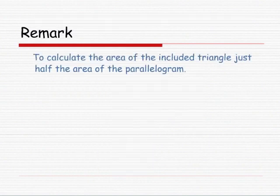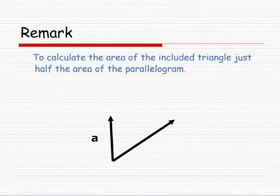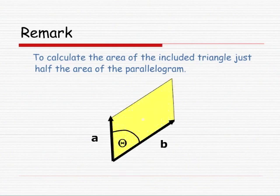We'll remark here that to calculate the area of the included triangle, just halve the area of the included parallelogram. So if we have vector A and vector B with included parallelogram in yellow with angle theta, the included triangle is this one in purple below.